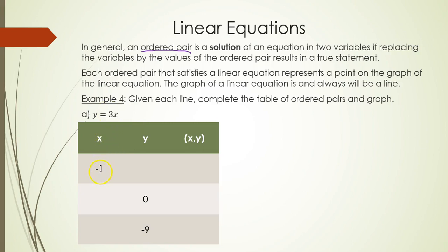If x is -1, I can literally plug in -1 for x into the equation to figure out what y is. So y = 3x, or 3 times -1, negative 3. So my ordered pair is (-1, -3).